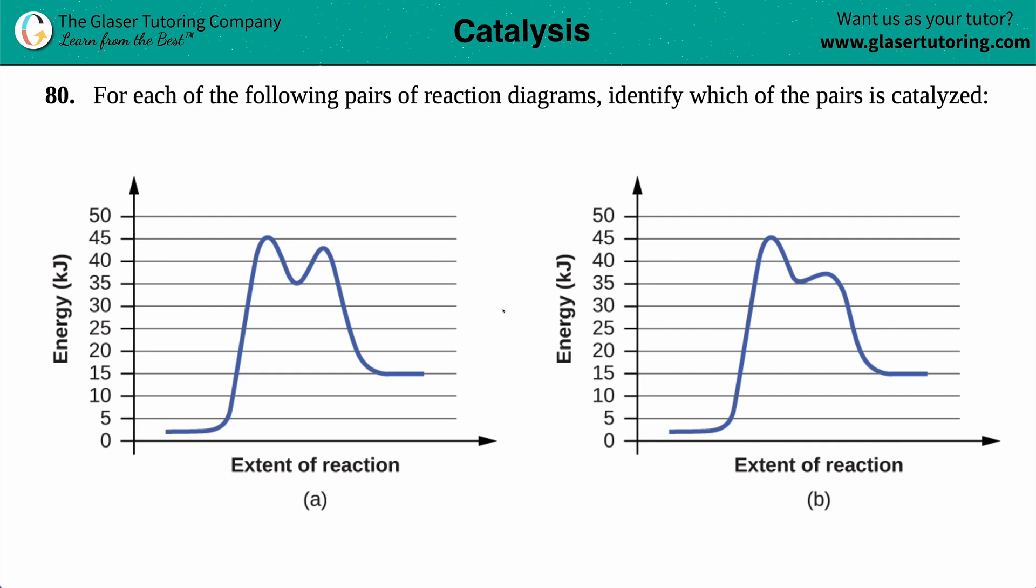Number 80. For each of the following pairs of reaction diagrams, identify which of the pairs is catalyzed. Okay, so here we have one pair. We have reaction A, which is this graph, and then we have reaction B, which is this graph. We need to find out out of these two which is the one that's catalyzed.